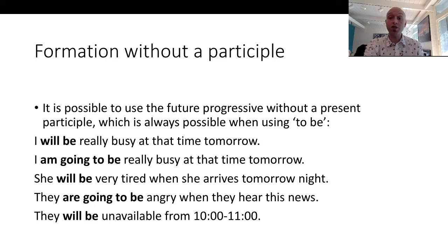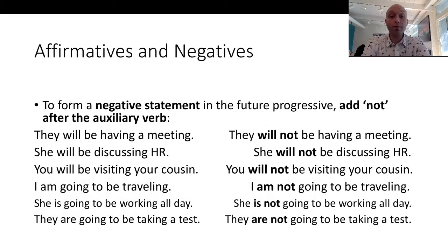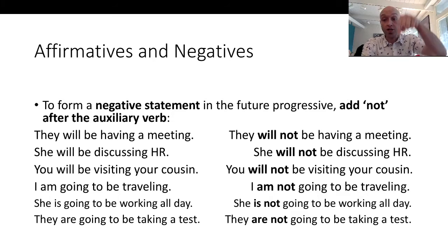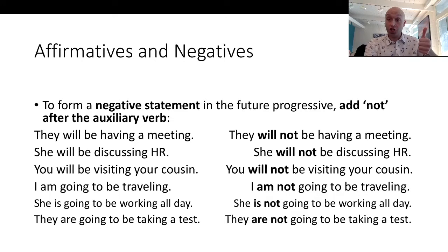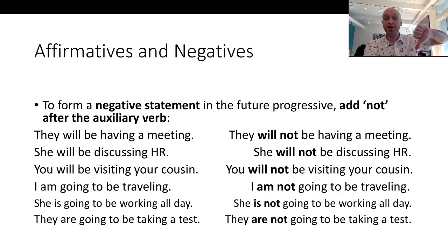So just so you know, it's possible to use the future progressive without a participle. Let's talk about affirmatives and negatives. Affirmatives and negatives can be formed by simply putting 'not' after the auxiliary verb. Examples: 'they will be having a meeting' / 'they will not be having a meeting.' 'She will be discussing HR' / 'she will not be discussing HR.' 'You will be visiting your cousin' / 'you will not be visiting your cousin.'